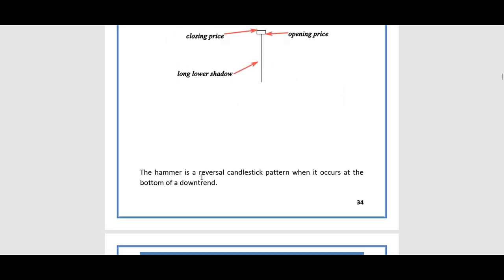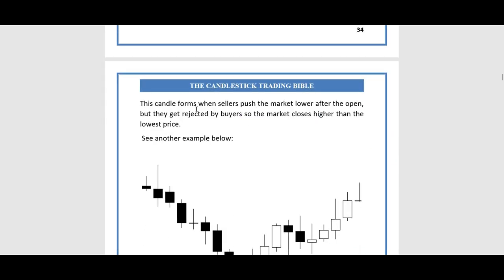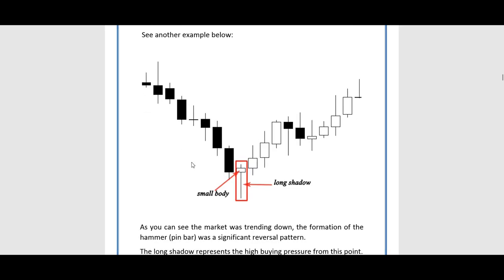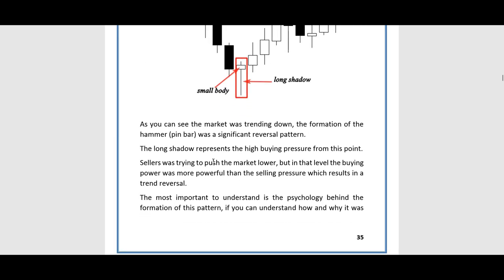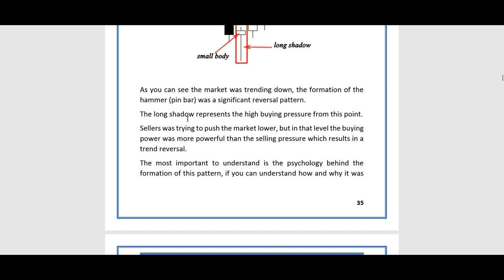The hammer is a reversal candlestick pattern when it occurs at the bottom of a downturn. This candle forms when sellers push the market lower after the open, but they get rejection by buyers, so the market closes higher than the lowest price. As you can see, the market was trending down and the formation of the hammer or pin bar was a significant reversal pattern.